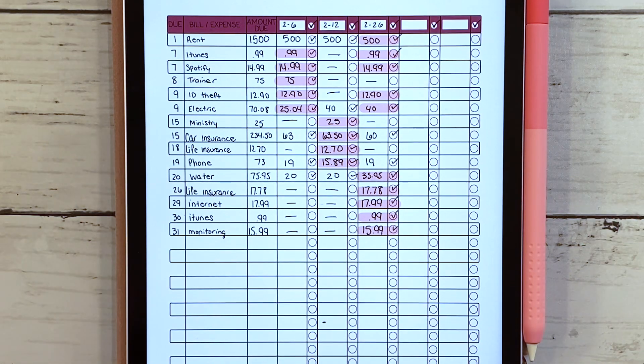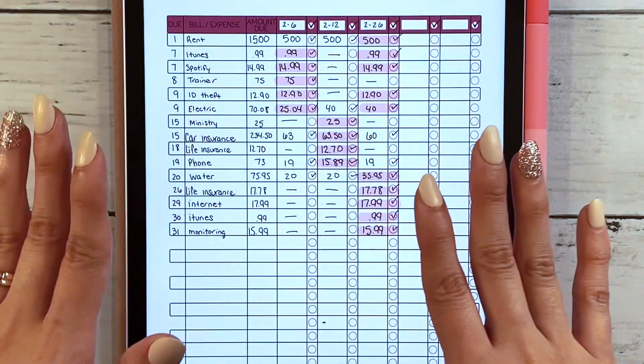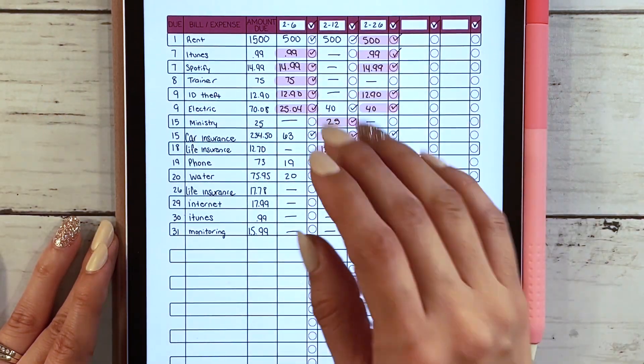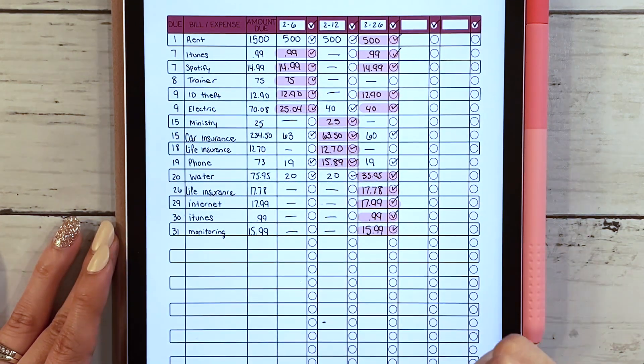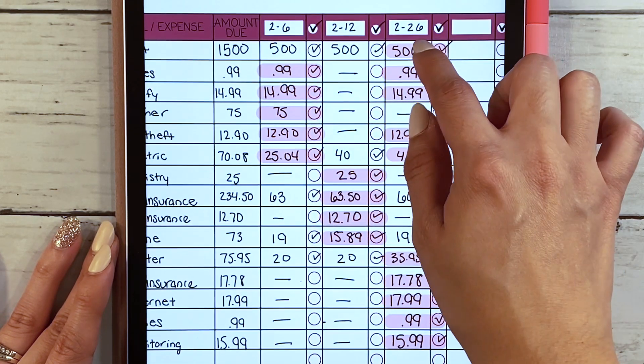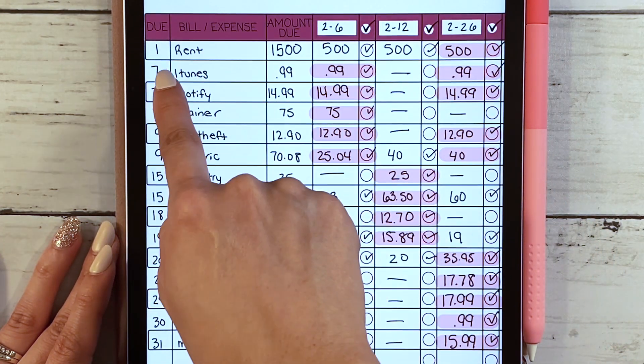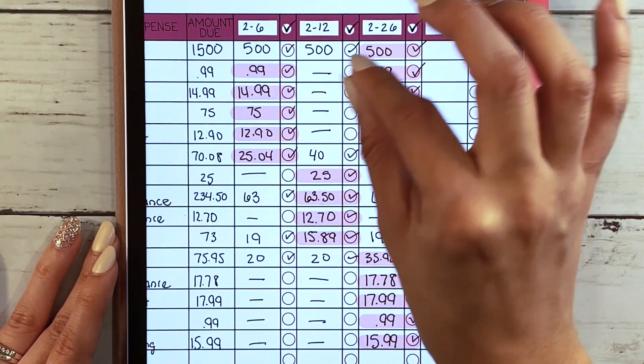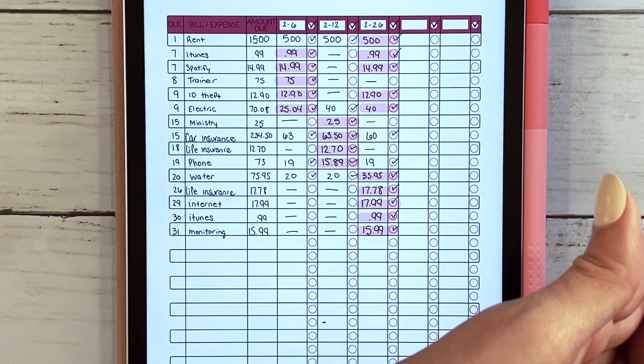I really like breaking up my paycheck budgets utilizing this method. What I do is I first highlight when I know I have to have the total funds set aside. For example, this is the last pay for February, so I know I have to have our rent, which is due on the first, in my bank account.